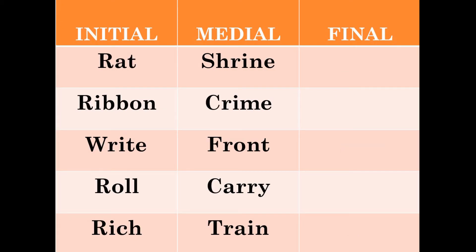The R sound occurs initially in words such as rat, ribbon, right, roll, ridge; and medially in words such as shrine, crime, front, carry, train. R is usually not pronounced in the final position; however, if a word is immediately followed by another word beginning with a vowel sound, R is pronounced — this is known as linking R.